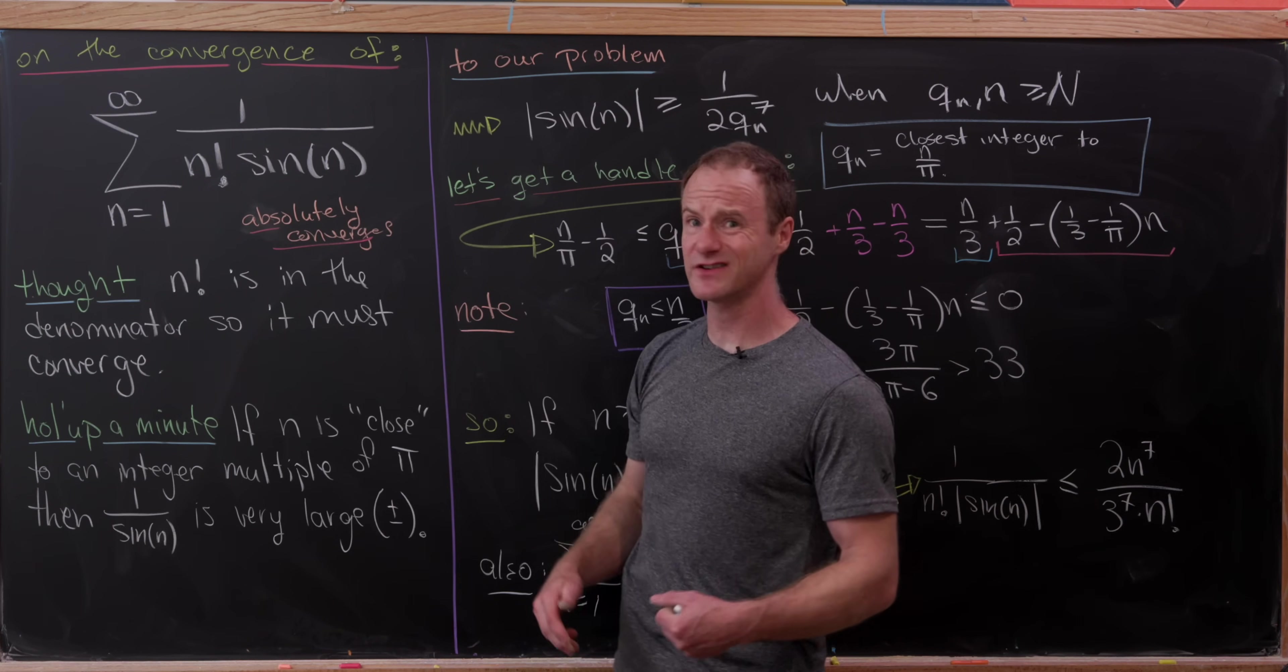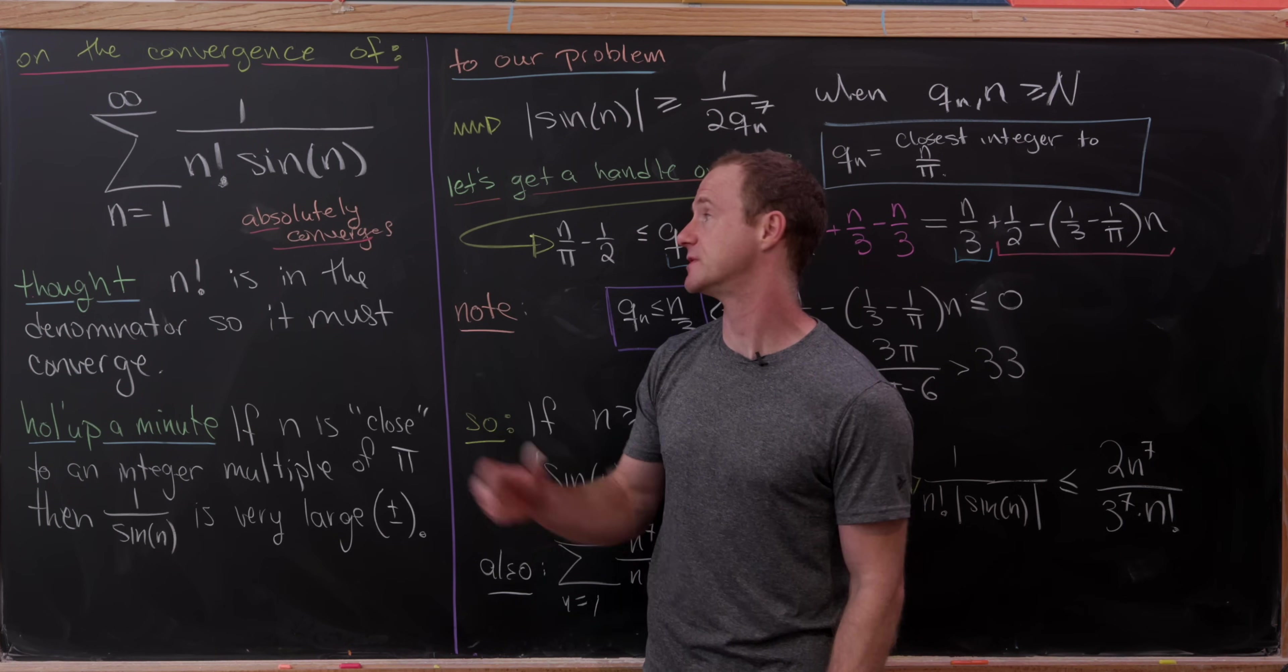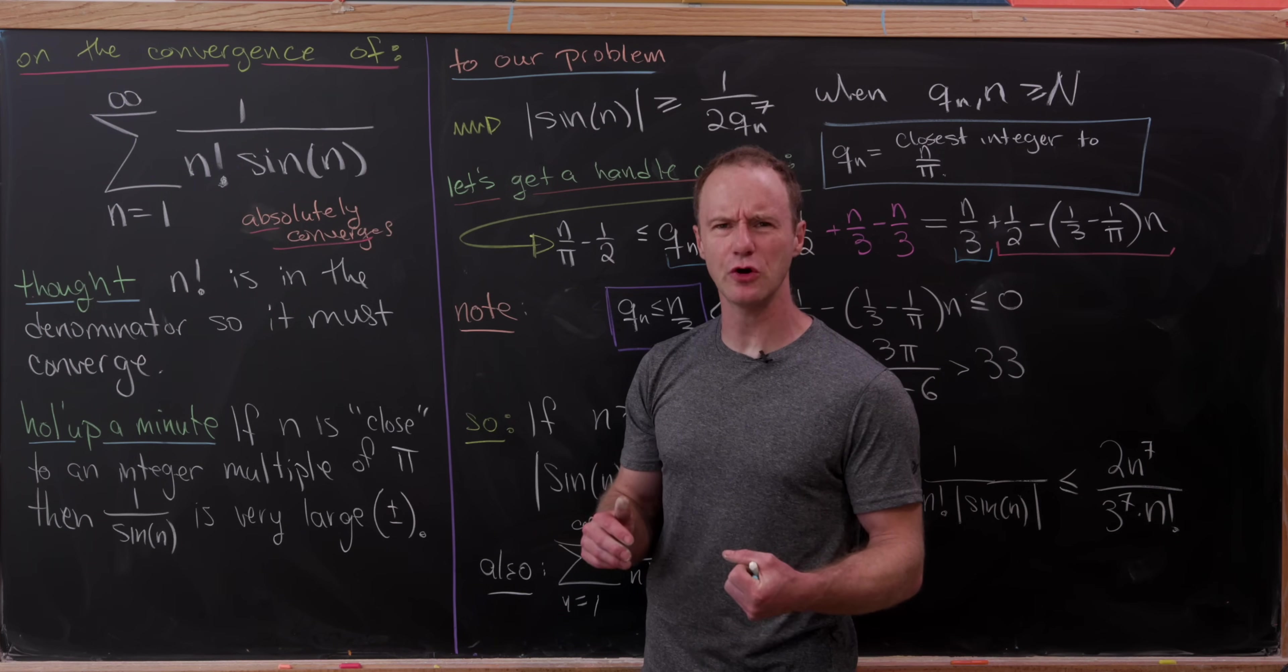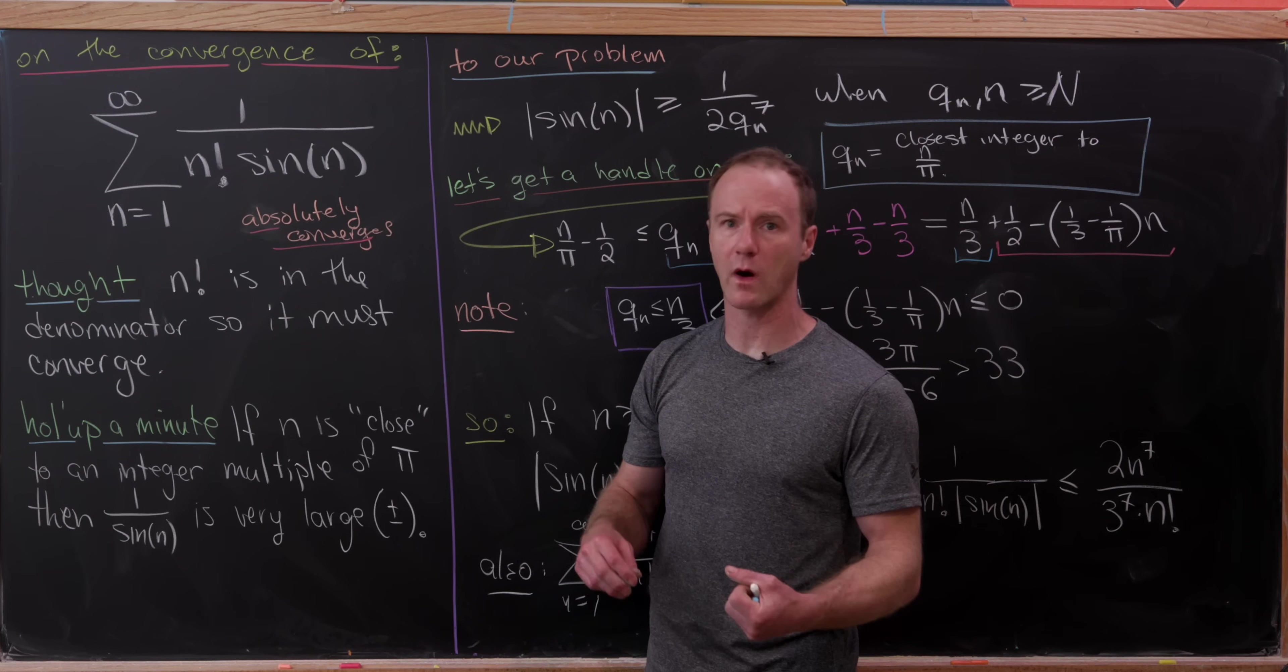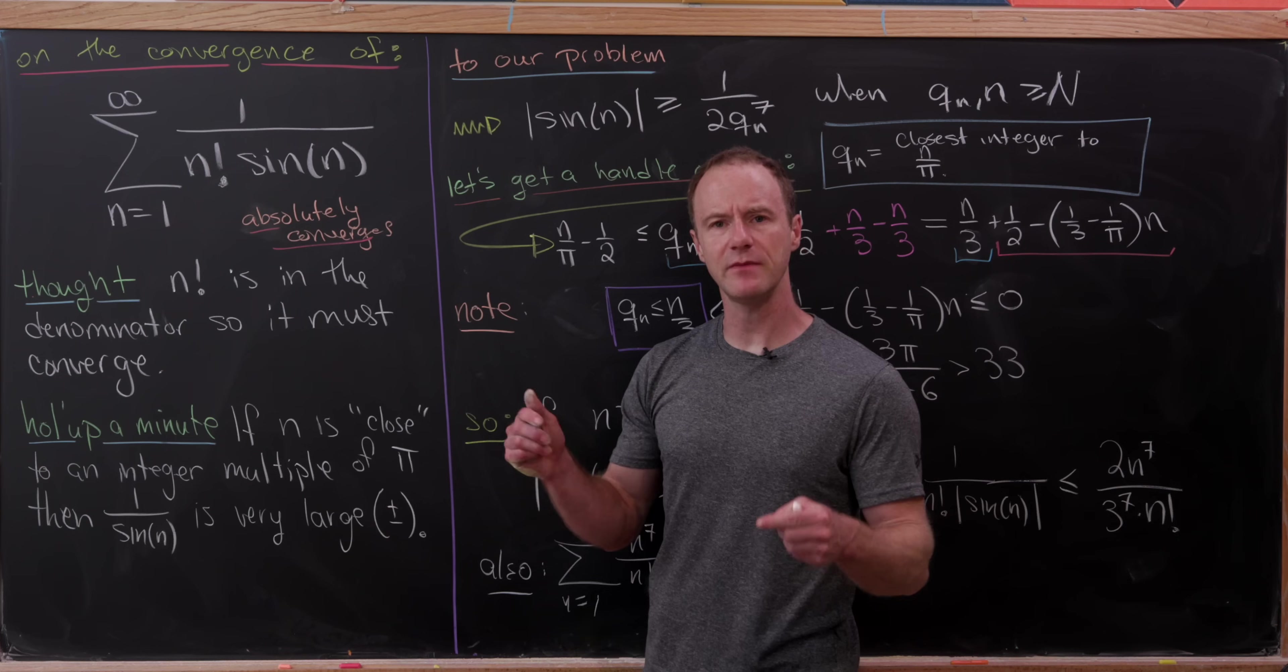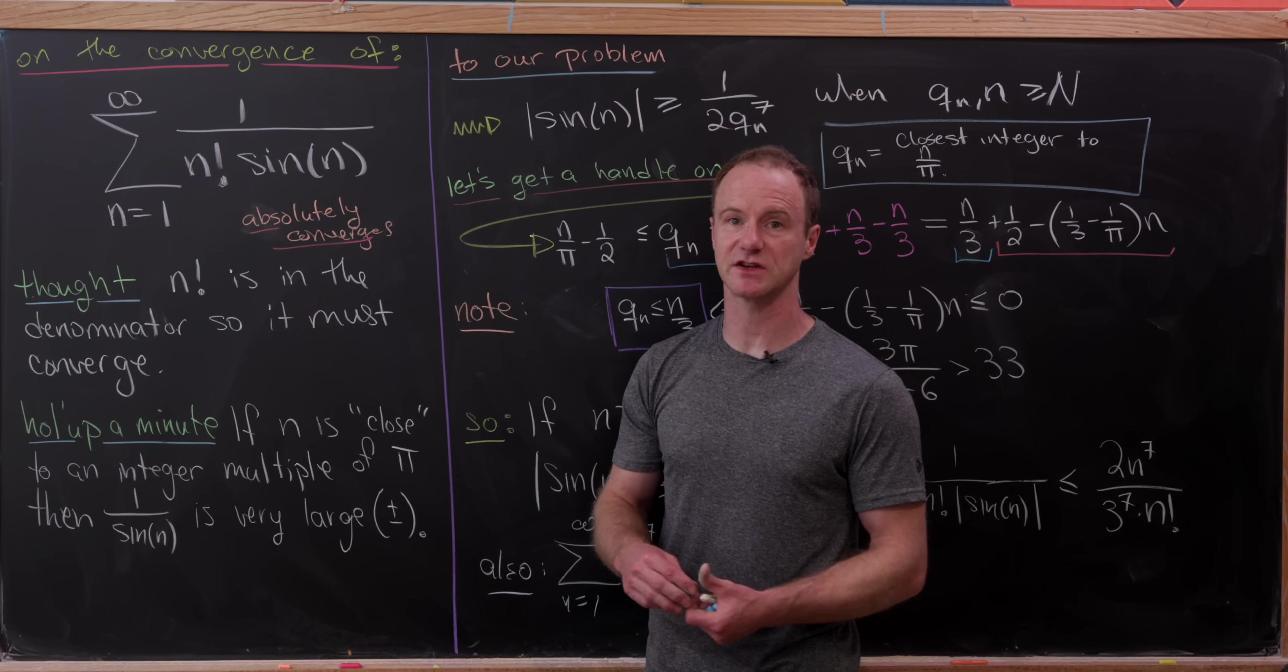While this series is easy to write down and very easy to understand, we had to use some pretty heavy machinery to get here. That brings me to a question for you: do you know of any series that are really easy to write down and understand but require heavy machinery to decide if they converge or diverge? Maybe post them in the comments. If you're still here and haven't subscribed, consider subscribing. It would really help us out. That's a good place to stop.